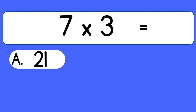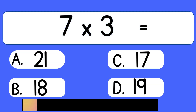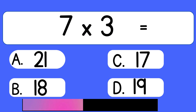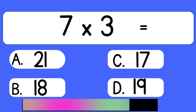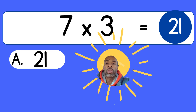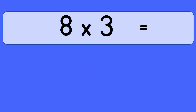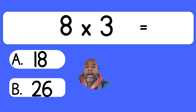7 times 3. 7 times 3 equals 21. 8 times 3.